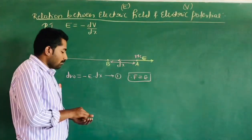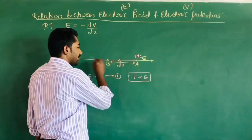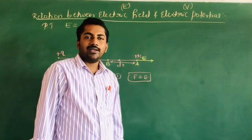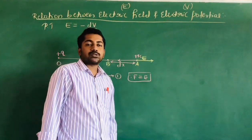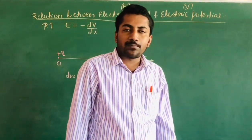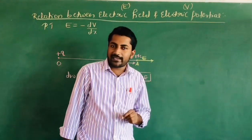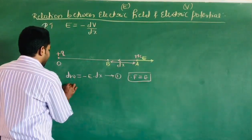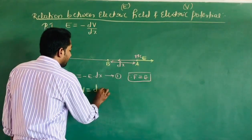The amount of work done in bringing a unit positive charge from one point to another point is called electric potential. Electric potential at that point is defined as the amount of work done in bringing a unit positive charge from infinity to that point against the direction of electric field. Therefore, in this case, electric potential dV is equal to dW.